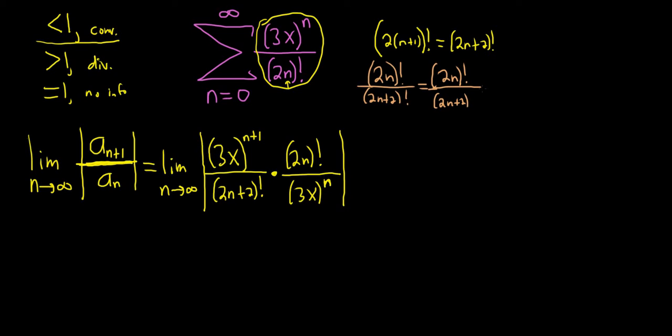And the rule is you just subtract 1. So subtracting 1 from that would give you 2n plus 1. And then subtracting 1 from that would give you 2n, 2n minus 1, 2n minus 2, etc. In other words the rest of this is simply 2n factorial. So these cancel and you're left with 2n plus 2 and 2n plus 1 on the bottom.